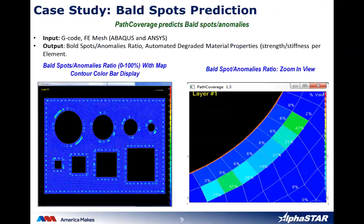For the degraded material properties, we discretize the bald spot ratio into different regions — for example, 5%, 10%, 15%, up to 90%. For 100% bald spot, we use the same degradation as the 90% level to degrade the stiffness and strength material properties.